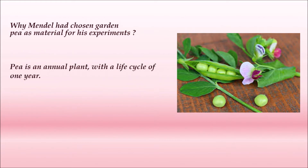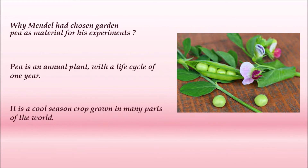Pea plant is an annual plant with a life cycle of only one year — it completes its life cycle in one year. It is a cool seasonal crop grown in many parts of the world.